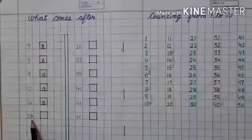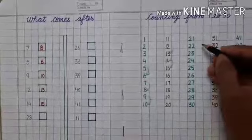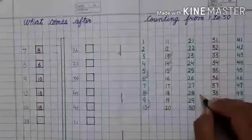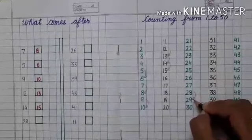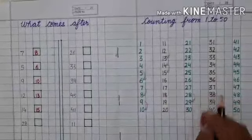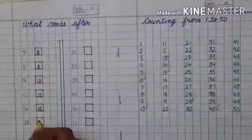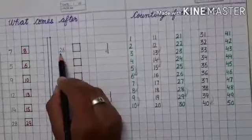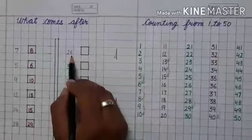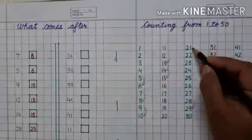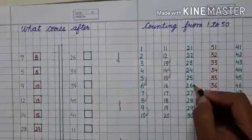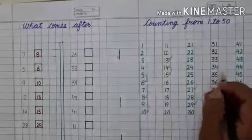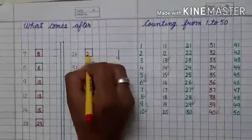Next number is twenty-eight. You have to see the series of twenty-one to thirty. What comes after twenty-eight? Twenty-nine — twenty-nine is the next number. Write twenty-nine in the box. Come to the next line. Here is twenty-six written. What comes after twenty-six? Twenty-seven — twenty-seven is the next number. Write twenty-seven in the box.